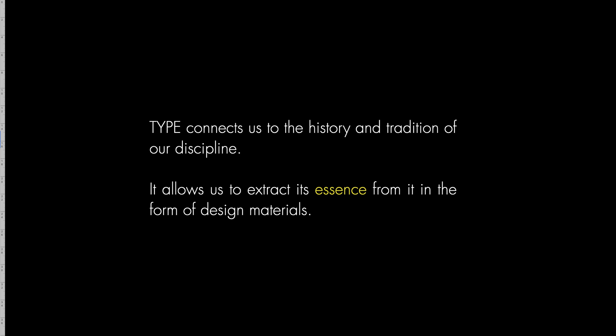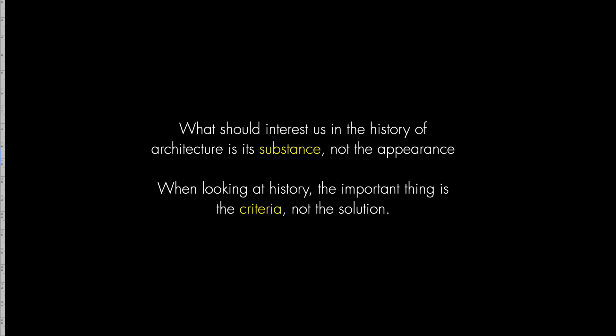Type allows us to be connected to the history and tradition of our discipline — it allows us to extract the essence with which we will design. It is important to stress that what should interest us in history is the substance, not the appearance. When we look at history, the important thing is the criteria for the projects, not the solution itself — substance, not appearance. Perhaps what was wrong with postmodern architecture of the 1980s was the fact that they were more interested in the appearance of historic buildings than their substance. That is why so many funny-looking buildings were built.